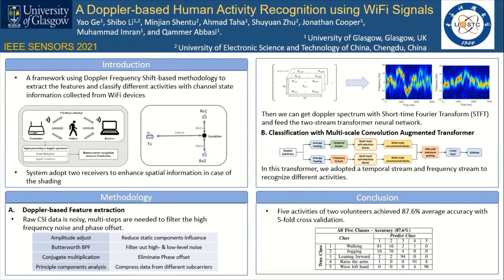To be more specific, we apply three commercial Wi-Fi devices, including one transmitter and two receivers equipped with a specific software driver. Meanwhile, the position setup is shown in the figure. We collect in total five different activities, and each profile lasts for three seconds.